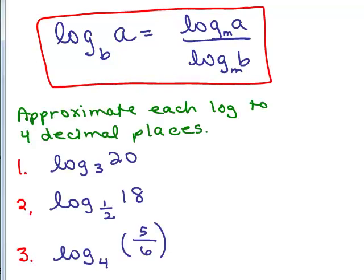So here are three problems for you to try. You're going to use this change of base formula and you could either use the log or the natural log key on your calculator. So put the video on pause and approximate each of these to four decimal places.